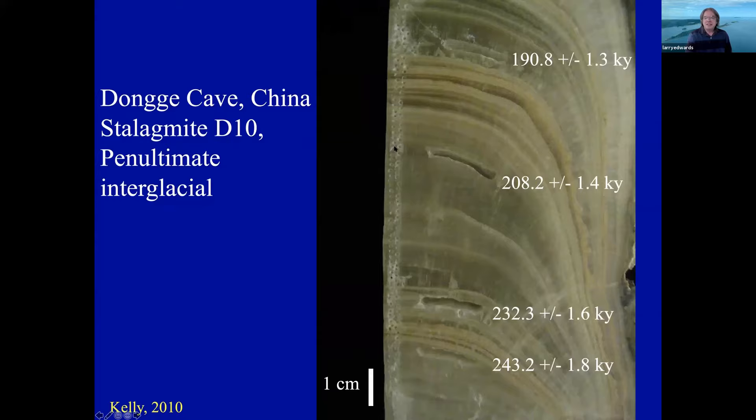Here's an example from Dongge — the left half is cut off, so you're just seeing the right half. This shows conventional dating: back around 200,000 years ago you see these drill holes, uranium-thorium dates, and then oxygen isotopes can be determined on much smaller amounts, so you see all of these little holes for oxygen isotopes.